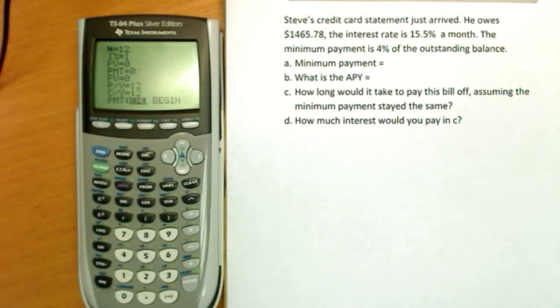Okay, this problem is going to involve credit cards and APY. Steve's credit card statement just arrived. He owes $1,465.78. The interest rate on his card is 15.5% a month. The minimum payment is 4% of the outstanding balance. This is actually what most credit card companies are now charging, 4% of the outstanding balance. It used to be 2%. Obviously at 2% you're paying less but you paid for a much longer time, which allowed them to make more interest on you.